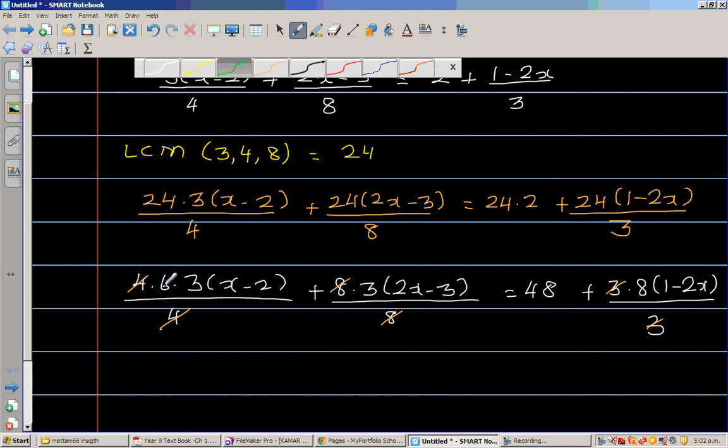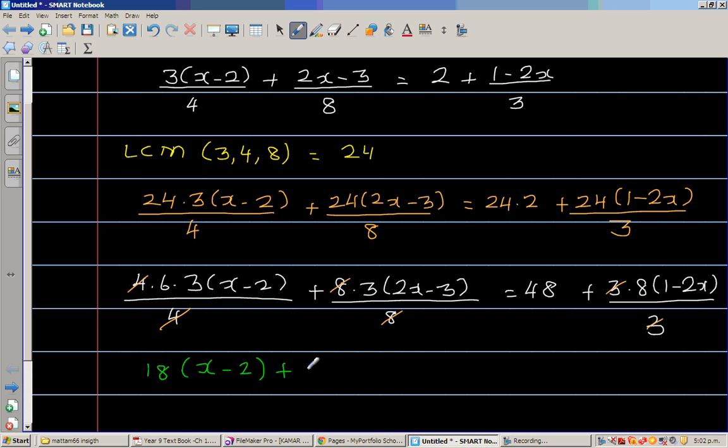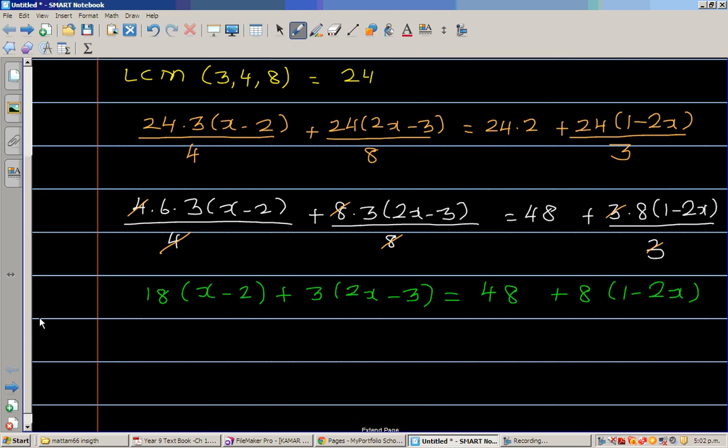So the next step is 6 times 3 is 18 times x minus 2 plus 3 times 2x minus 3 is equal to 48 plus 8 times 1 minus 2x. So what we can do is now we can expand this. So 18 times x is 18x minus 36 plus 6x minus 9 is equal to 48 plus 8 minus 16x.